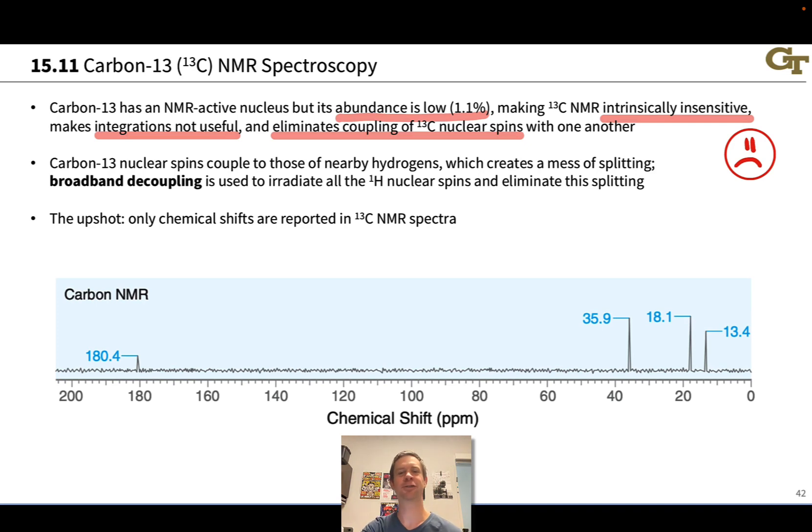Now we can still get useful information out of carbon-13 NMR spectra, but it's not as powerful a technique as proton NMR. Carbon-13 is an NMR active nucleus, and the proton is NMR active, and so any time we have a CH, CH2, CH3 group, those hydrogens are going to couple to the carbon and cause splitting of the carbon NMR signals. This creates a mess of splitting typically because of the large number of hydrogens in the vicinity of each carbon.